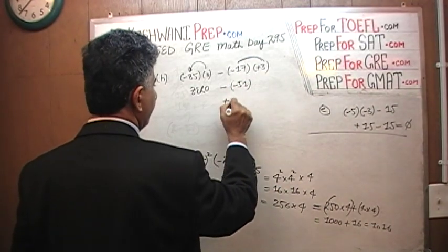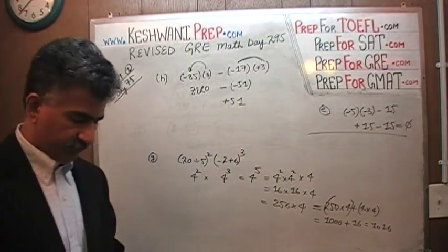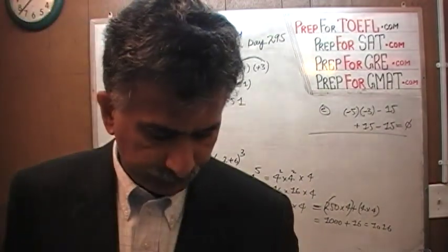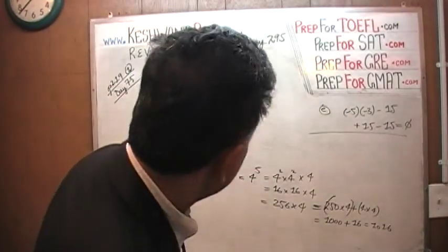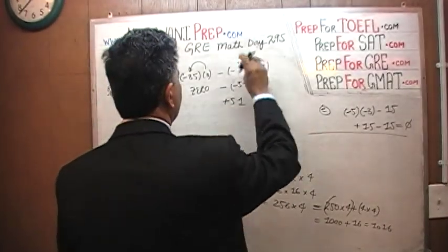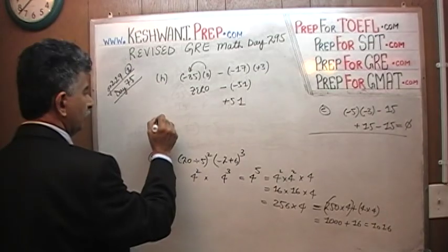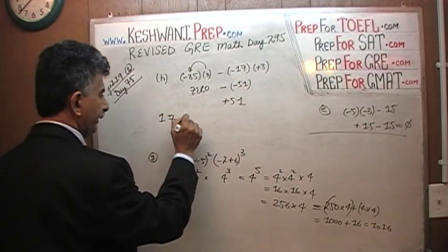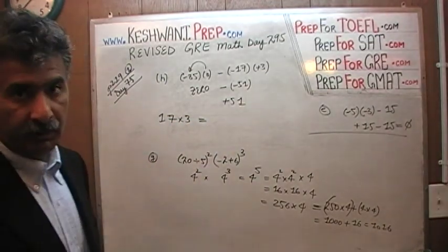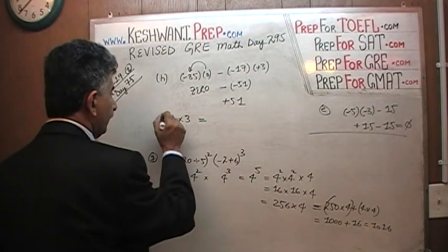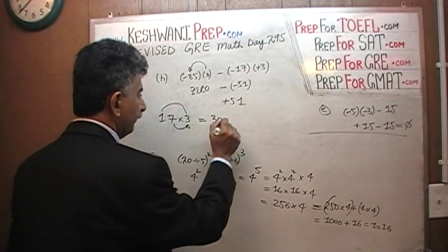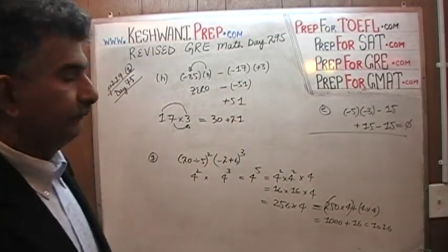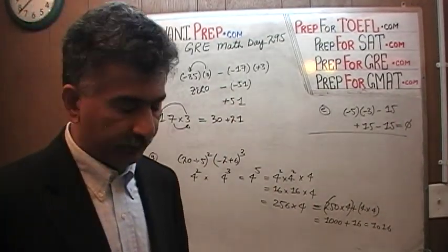The answer is positive 51. 17 times 3, what I was trying to figure out is this part here. If you have to do 17 times 3, I don't know what 17 times 3 is but I know that 10 times 3 is 30 and 7 times 3 is 21. So 30 plus 21 is 51.